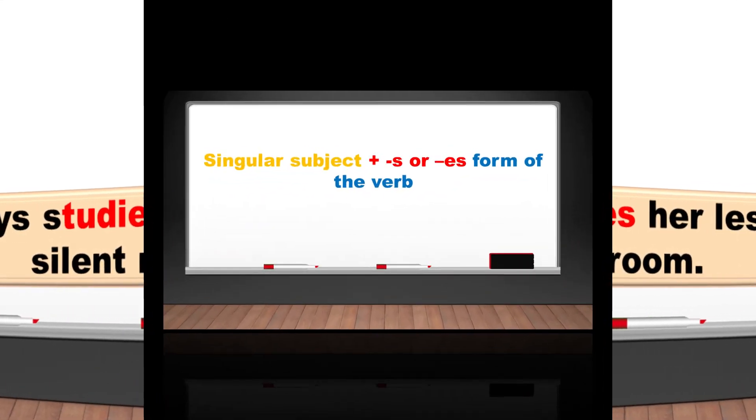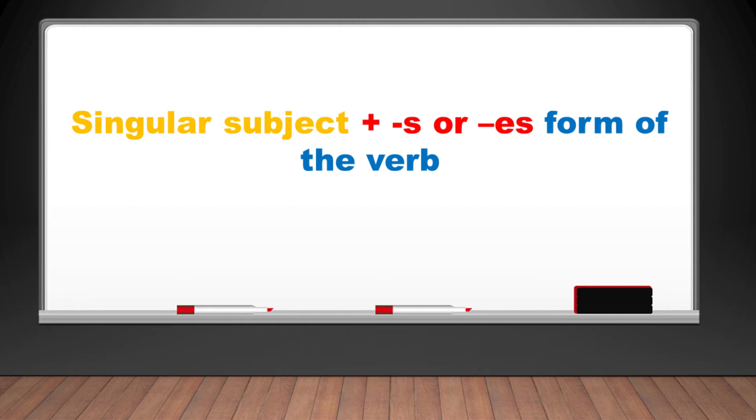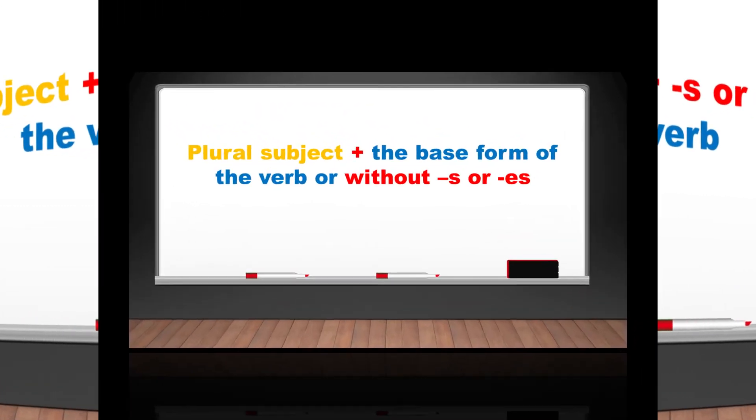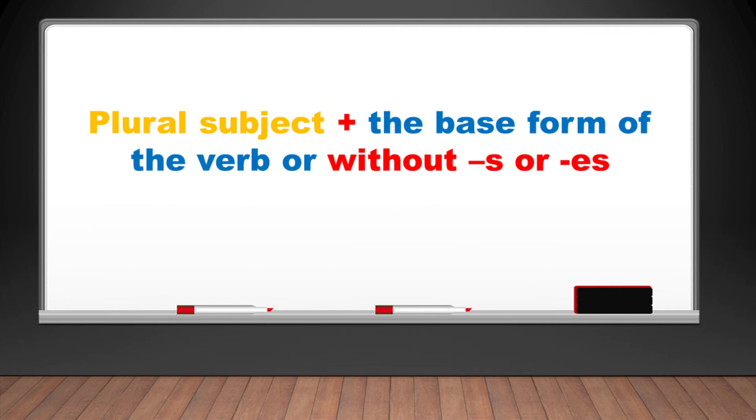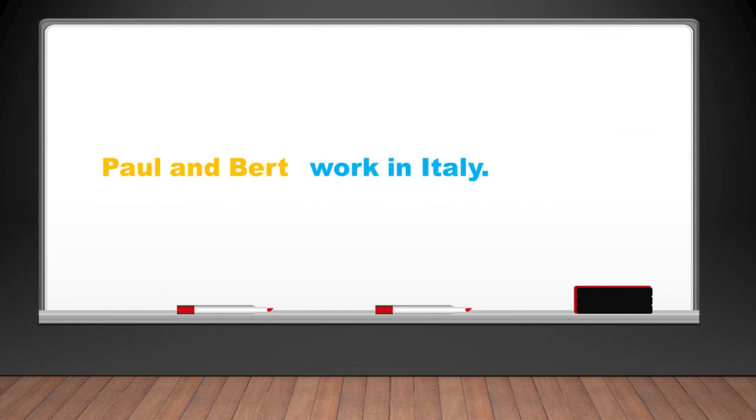So the general rule in using the present tense of the verb is: singular subjects follow the s or es form of the verb. Oppositely, a plural subject follows the base form of the verb. In this sentence, Paul and Bert work in Italy. Paul and Bert are the subjects of this sentence. The subject is more than one so it is a plural subject. Since the subject is plural, therefore the verb remains in its base form or without s or es. So as a general rule: plural subject plus the base form of the verb or without s or es.